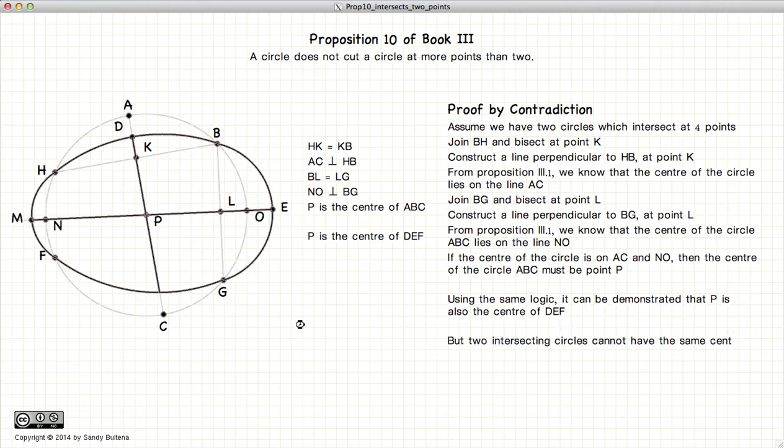However, we've already shown in Proposition 3.5 that two intersecting circles cannot have the same center. Hence, there is a contradiction. So here is our contradiction. And therefore, we cannot have two circles cutting each other at four points.